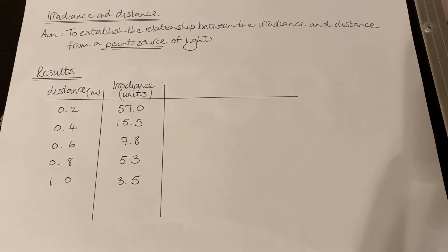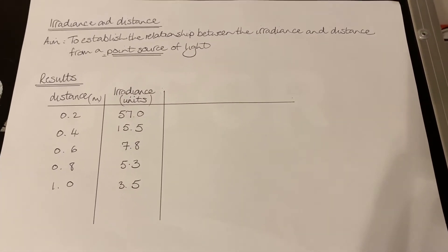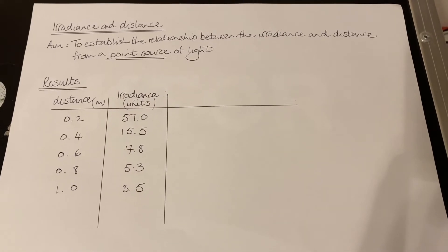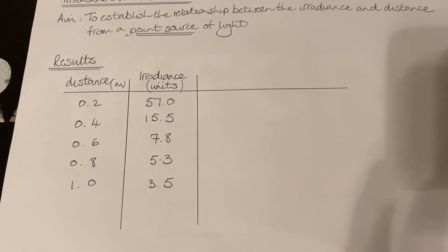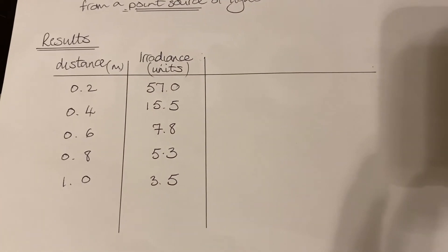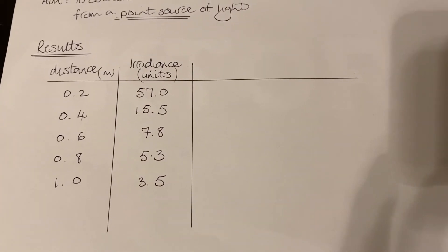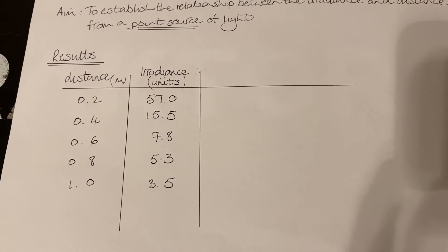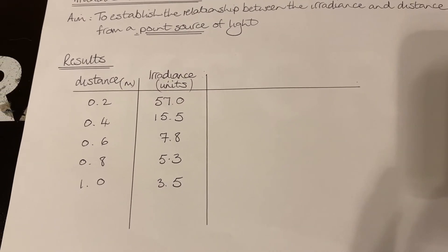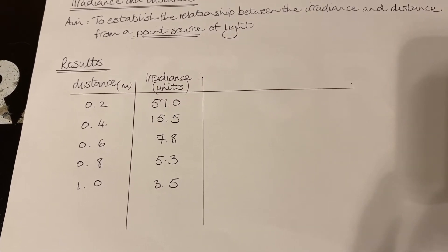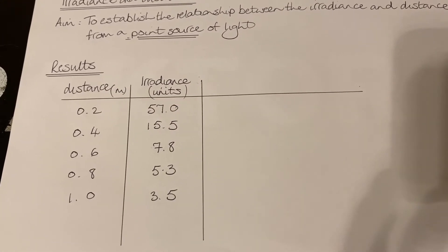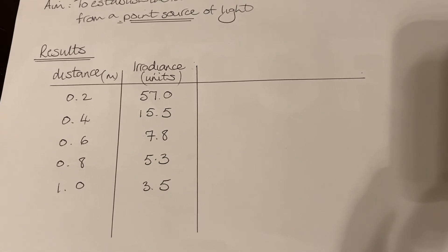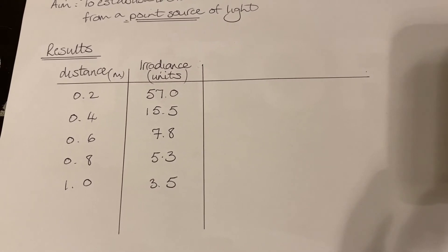So here are my experimental results in the table. First thing to notice, if we want to establish the relationship between irradiance and distance from a point source of light: as the distance increases, the irradiance decreases. And as we're dealing with a point source that radiates in all directions, then this may well be another instance of the inverse square law.